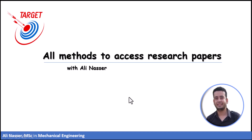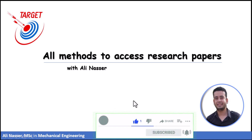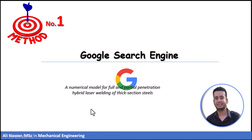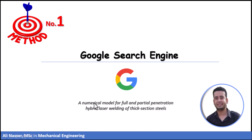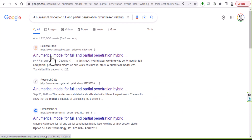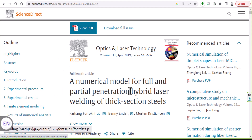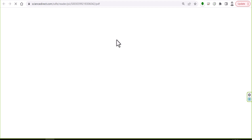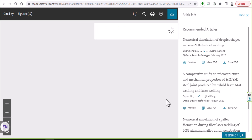Hello and welcome. In this video I'm going to explain the common methods to access or download articles. The first method uses the Google search engine. As a quick example, if you look for an article, just copy or type the address into the Google search engine like this, and after this you can find your article. If you go to this address and the article is free, you can download or view the PDF easily like this.